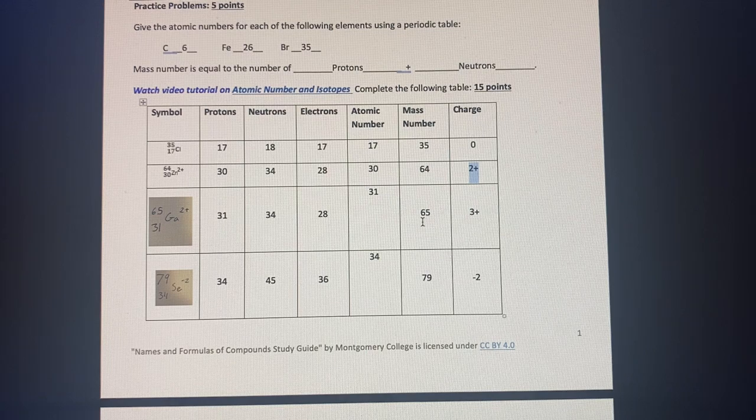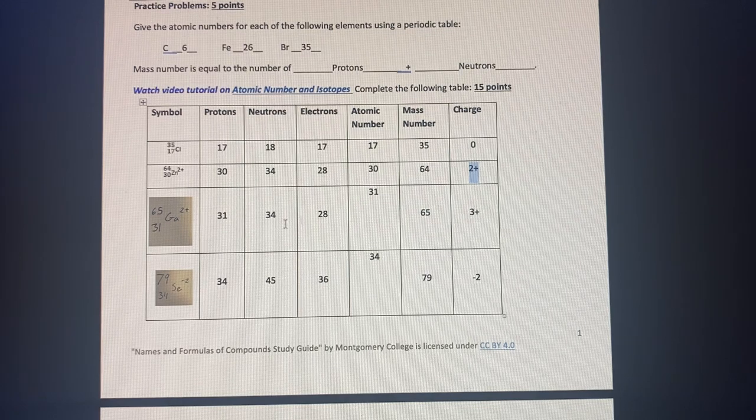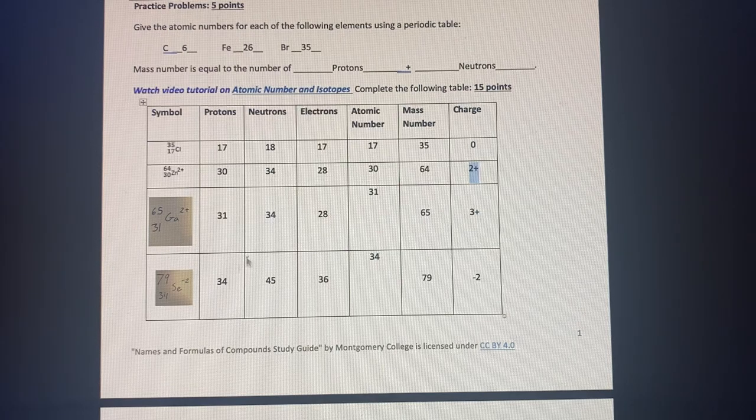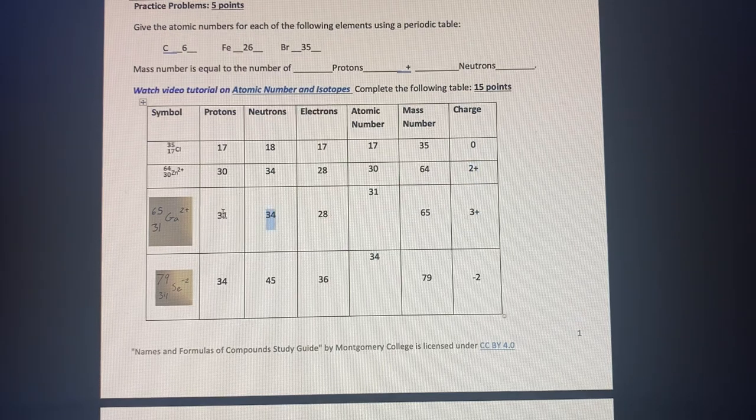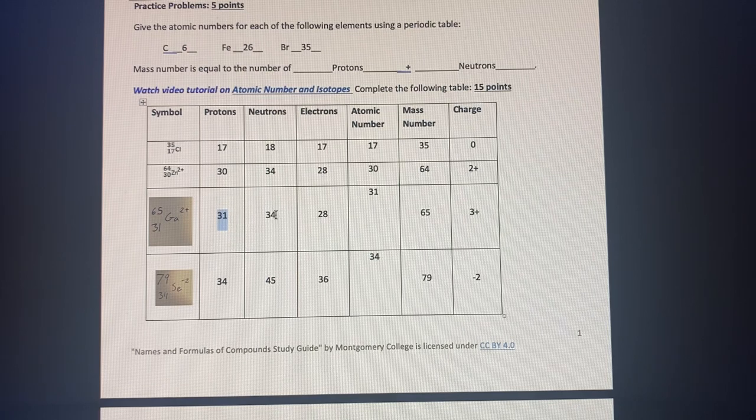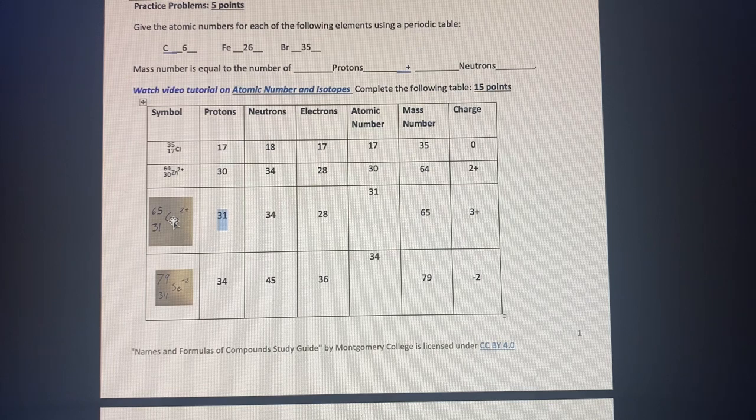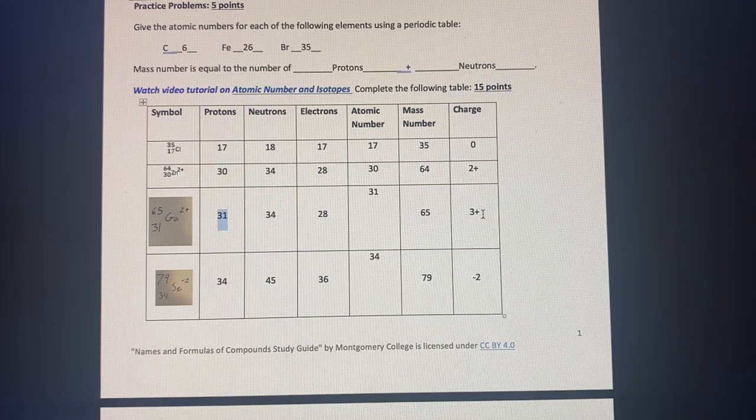Now the next two, we were given the mass number and the number of neutrons for one and number of protons for the other. So to find the number of protons, we're able to subtract the mass number from the neutrons. And then we're able to tell which element that is. We are also given the charge for this one. So we're able to know the number of electrons.